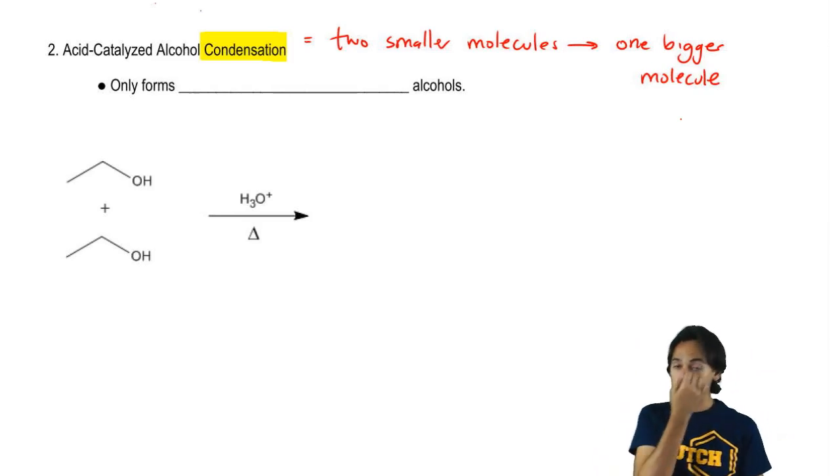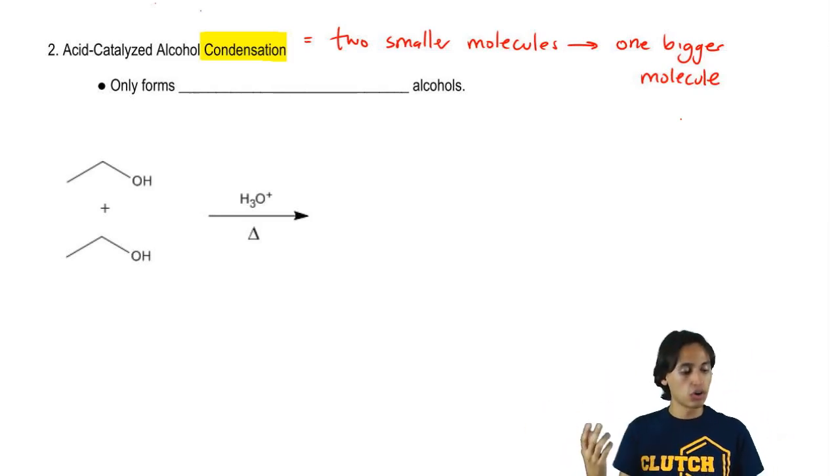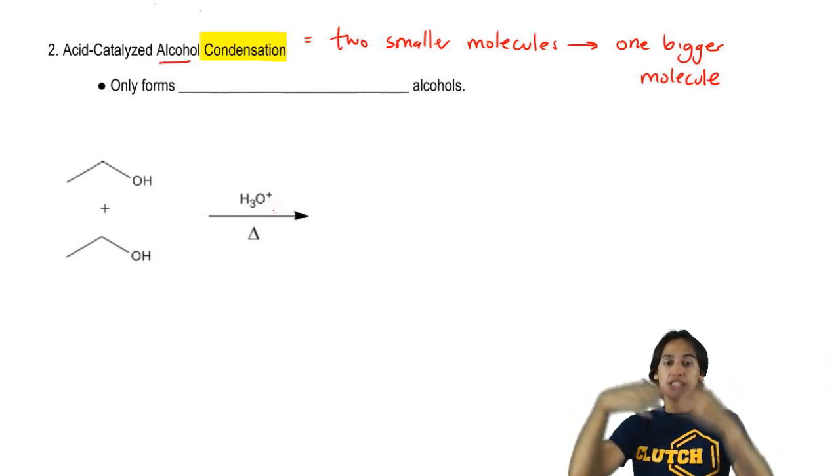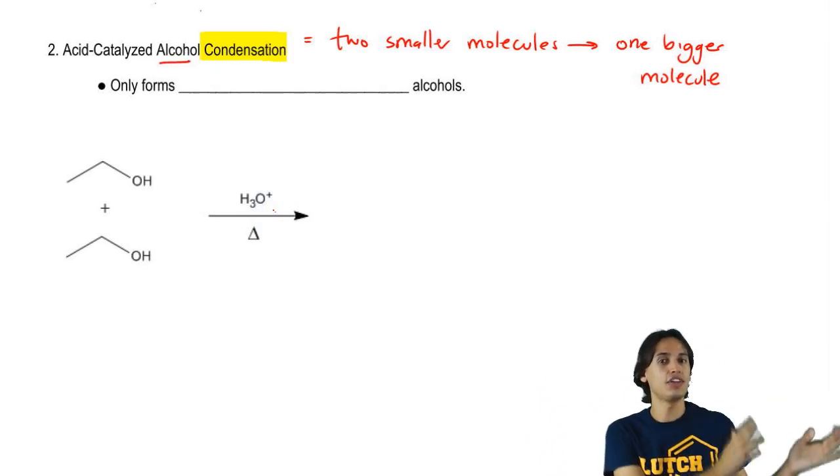So what we're going to be doing here is we're going to be taking two alcohols. It's an alcohol condensation. So we're going to take two alcohols, put them together, condense them, and they're going to turn into one ether.